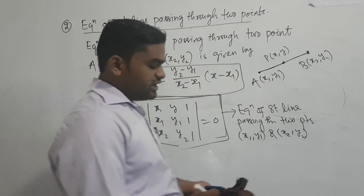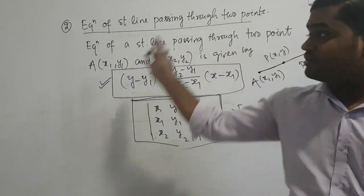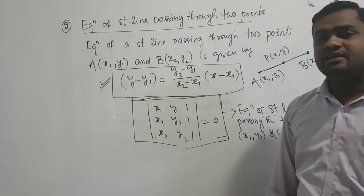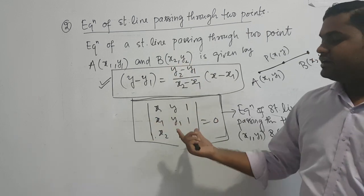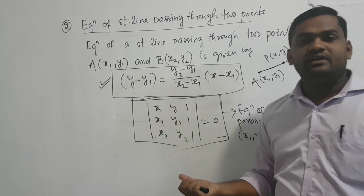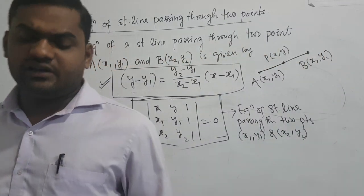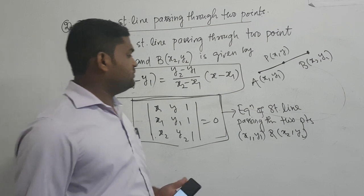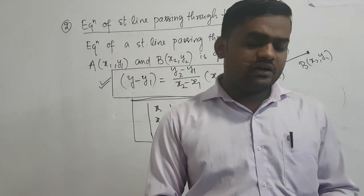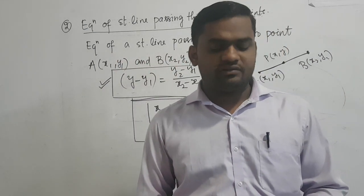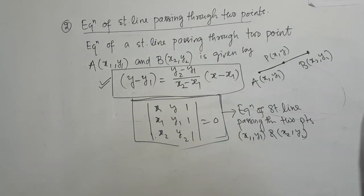This is the area of triangle in determinant form, and the equation of a line — the determinant form for the second element. We will send questions next. Next class will continue. Okay, thank you.